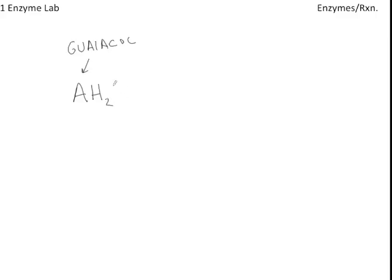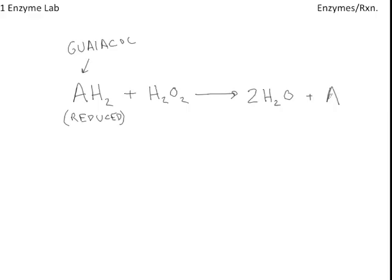One of the reactants here is Guaiacol in its reduced form. It reacts with hydrogen peroxide to give us the products: 2H₂O, plus Guaiacol again, but now in its oxidized state. This reaction is catalyzed by an enzyme called peroxidase.